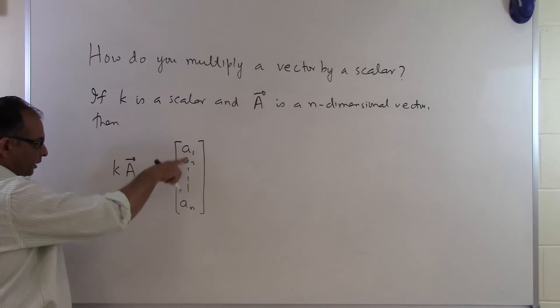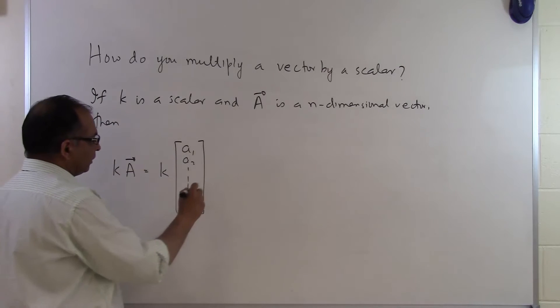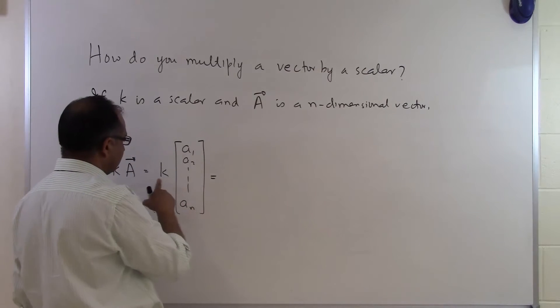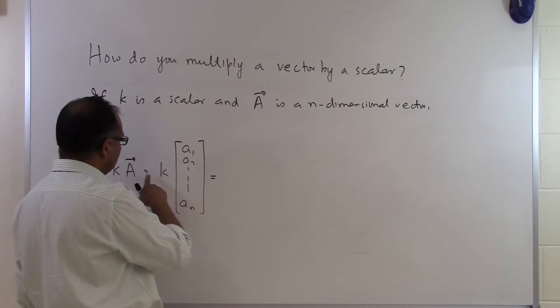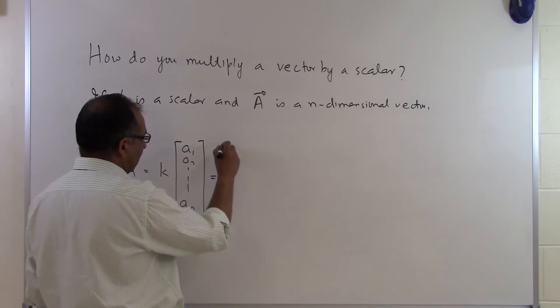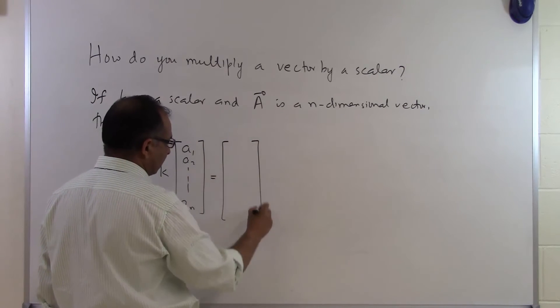So if the A vector is this and k is the scalar, then when we multiply the A vector by k, each component will get multiplied by k.